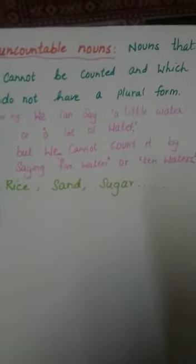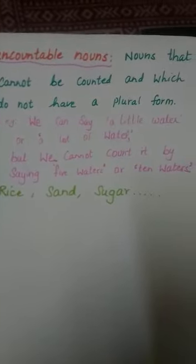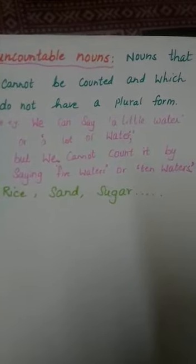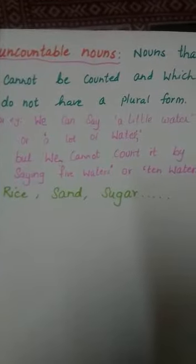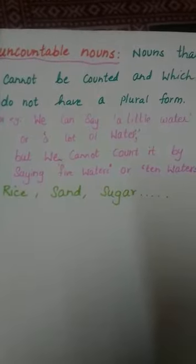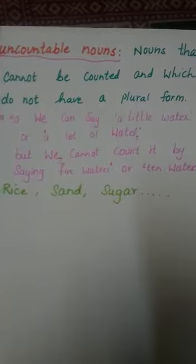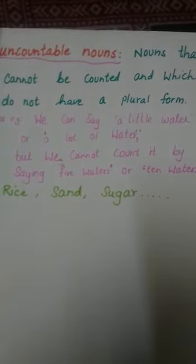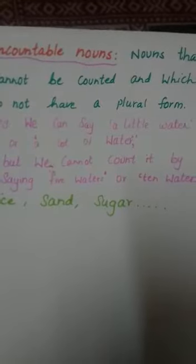Last class, we were talking about countable nouns. Today, uncountable nouns. Uncountable nouns are nouns that cannot be counted and which do not have a plural form. For example, we can say a little water or a lot of water, but we cannot count it by saying 5 waters or 10 waters.